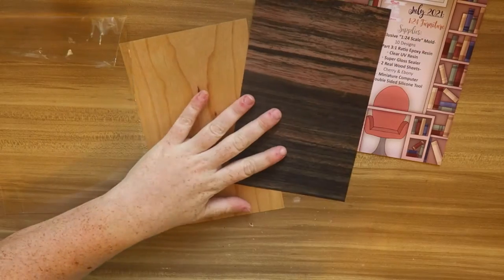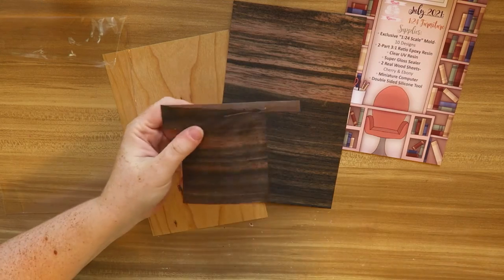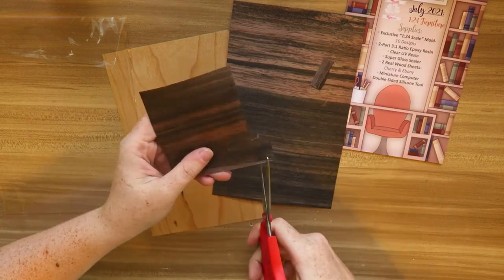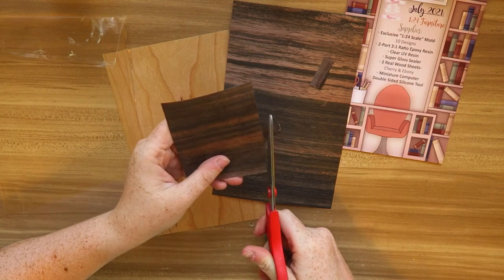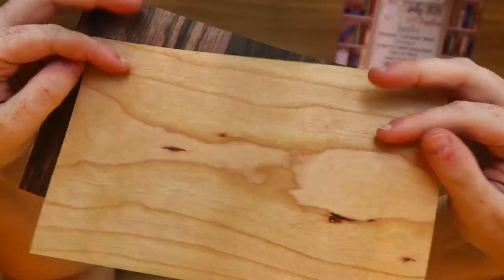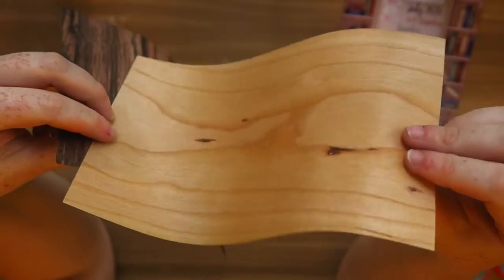Next, we have two real wood sheets and these sheets are thin enough to where you can cut them using scissors as seen here. So this will come in handy when we're decorating our furniture. Here's a close-up of the wood grain and I wanted to give a darker wood color option and then a lighter wood color option.